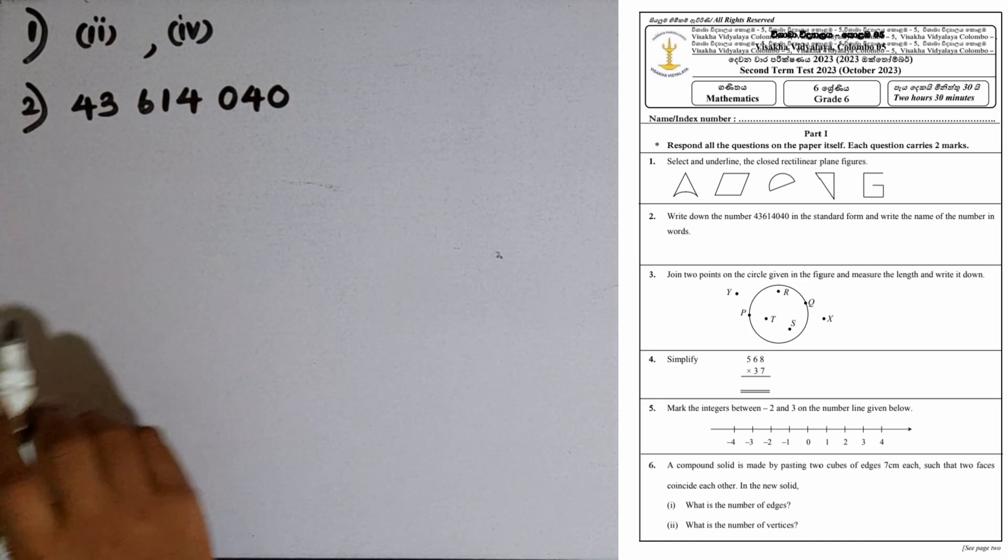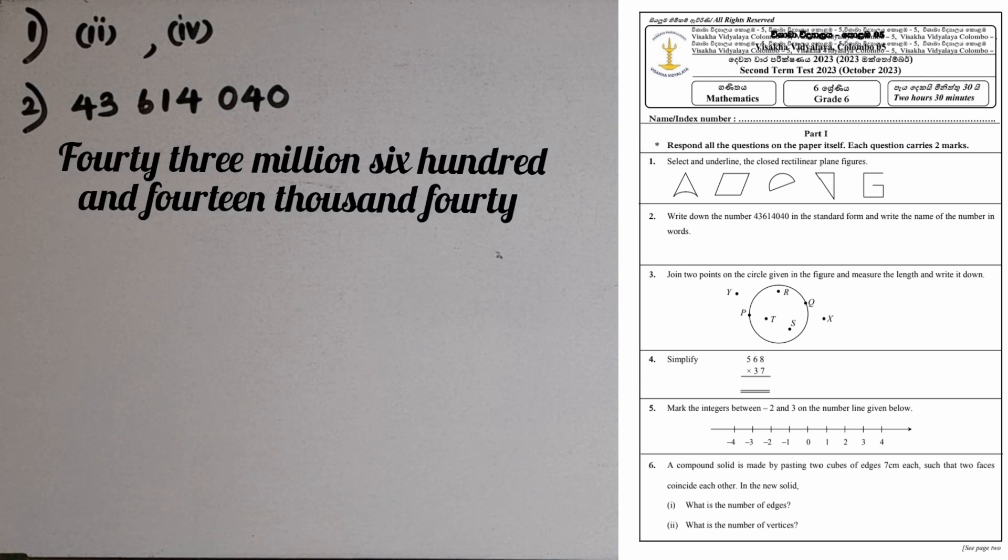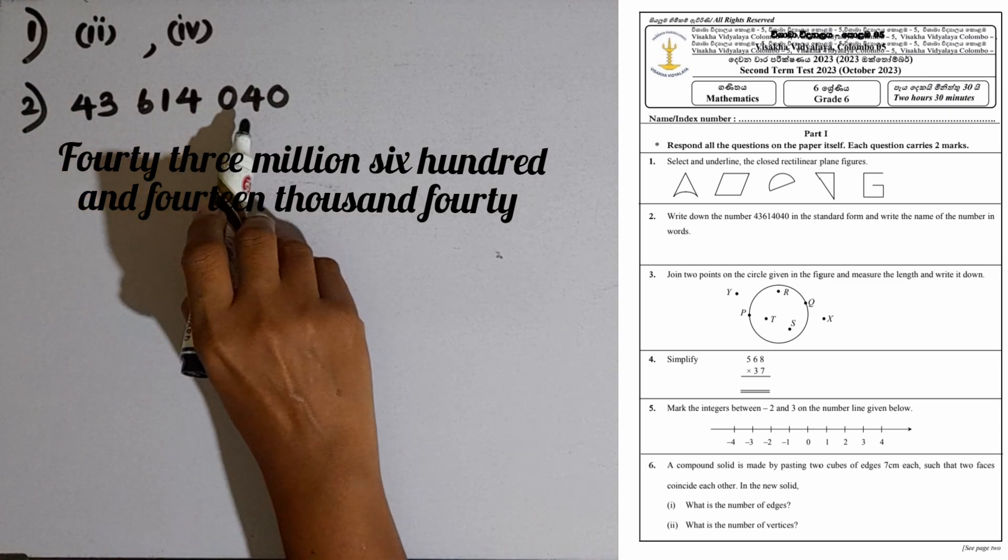How to name the number? 43 million, 614 thousand, 40. Forty-three million six hundred fourteen thousand forty.